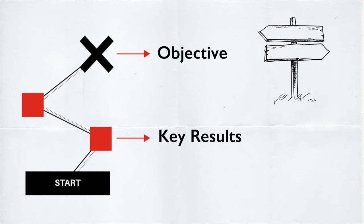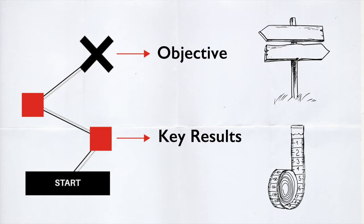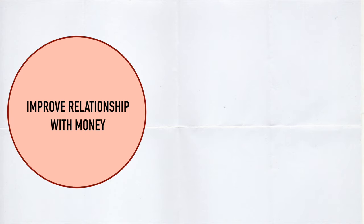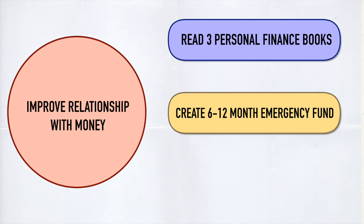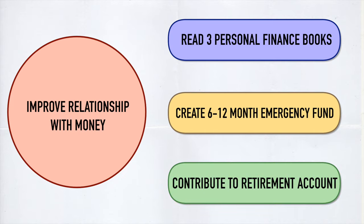They can be thought of as the "how" you are going to achieve your objective. There is a clear distinction between your objective and key results: objectives set the direction and should not contain a metric, while key results provide the measure to gauge that progress. For instance, one of my objectives was to increase my knowledge of personal finance and improve my relationship with money. My key results were to read three books on personal finance by the end of the year, create a 6–12 month emergency fund, and contribute consistently to a retirement account. Each of these key results gave me tangible goalposts to work towards that would ultimately get me closer to my overall objective.